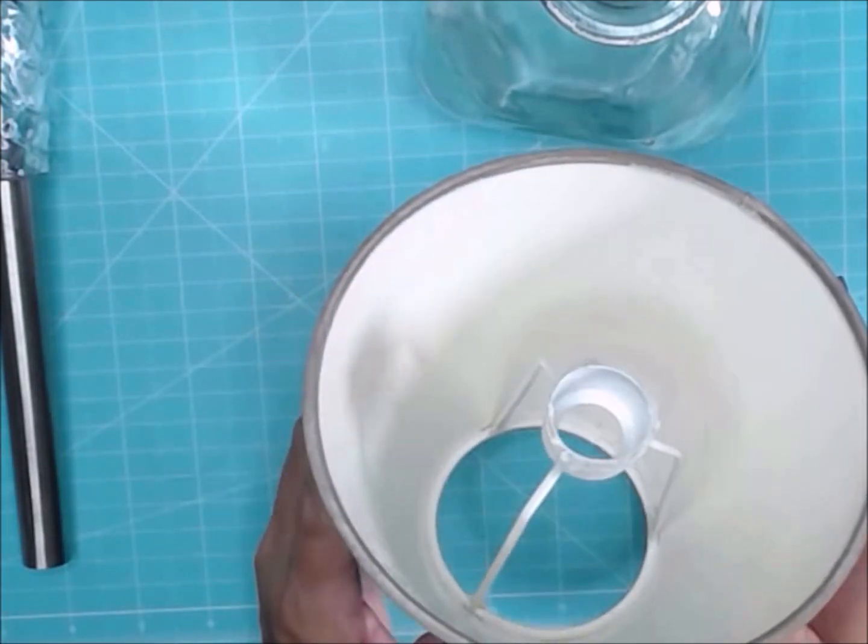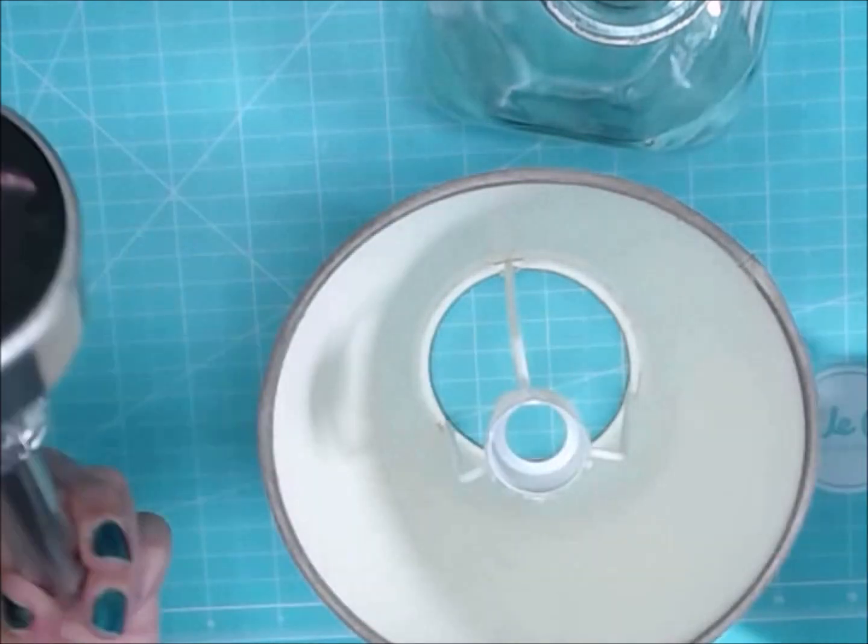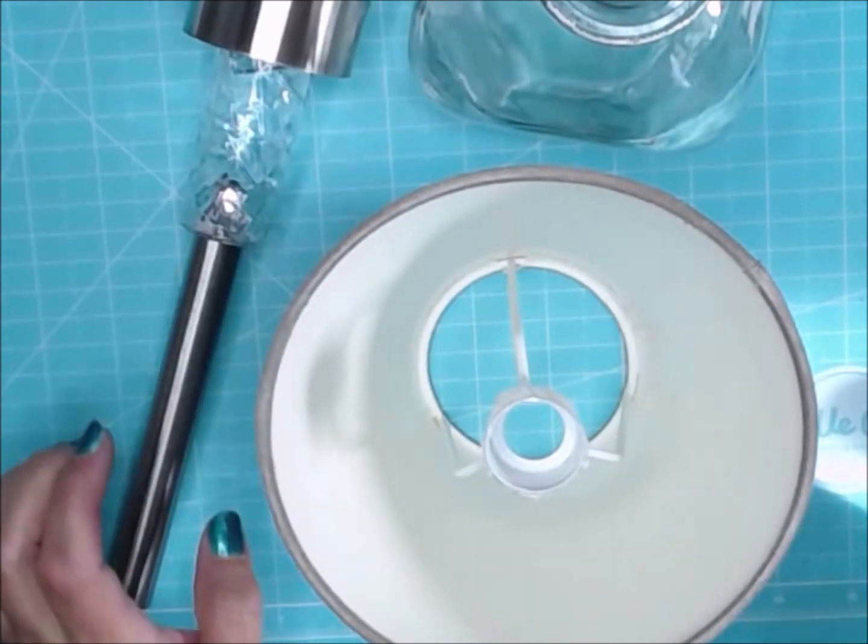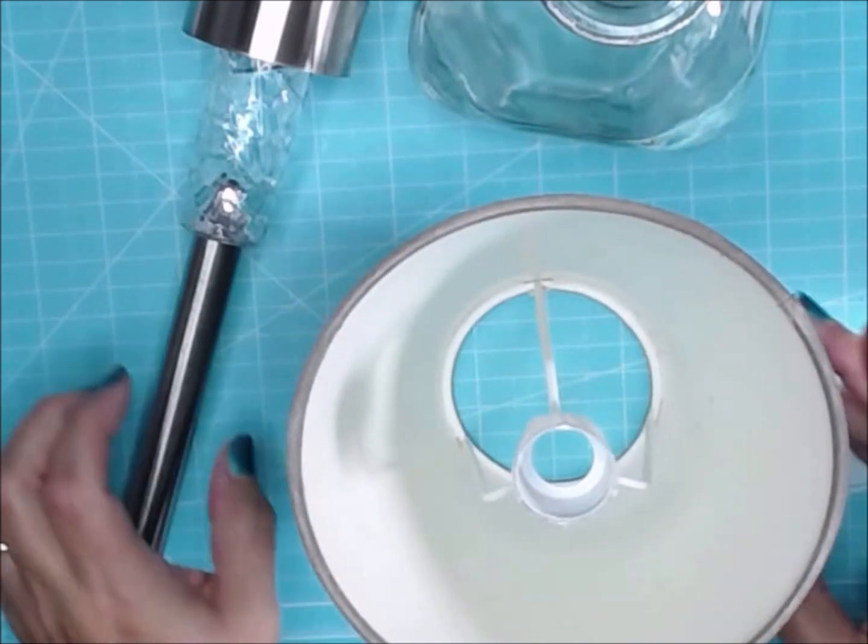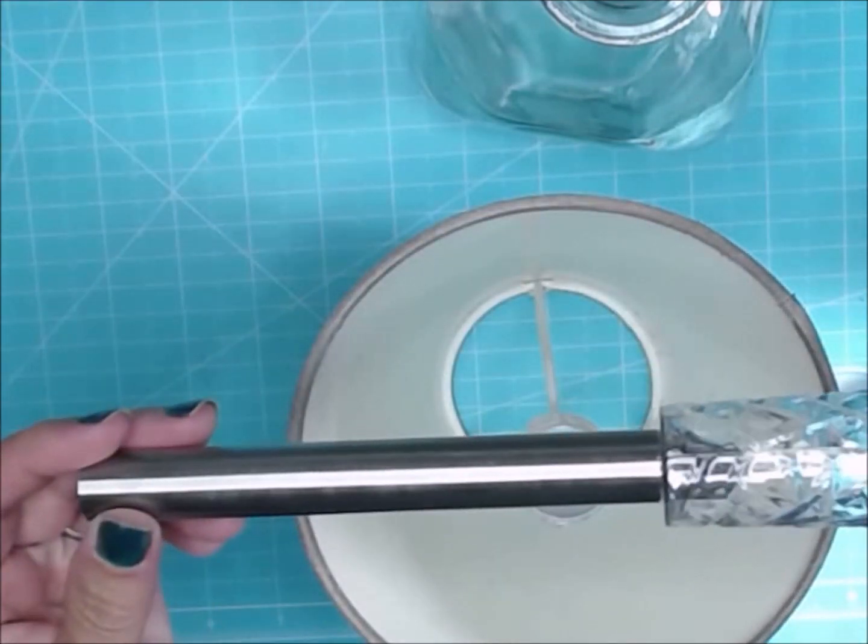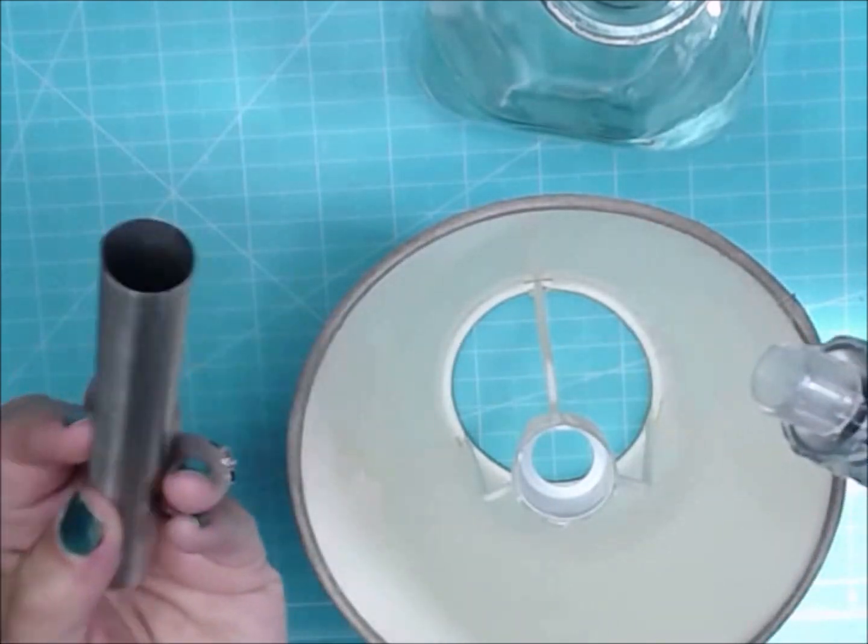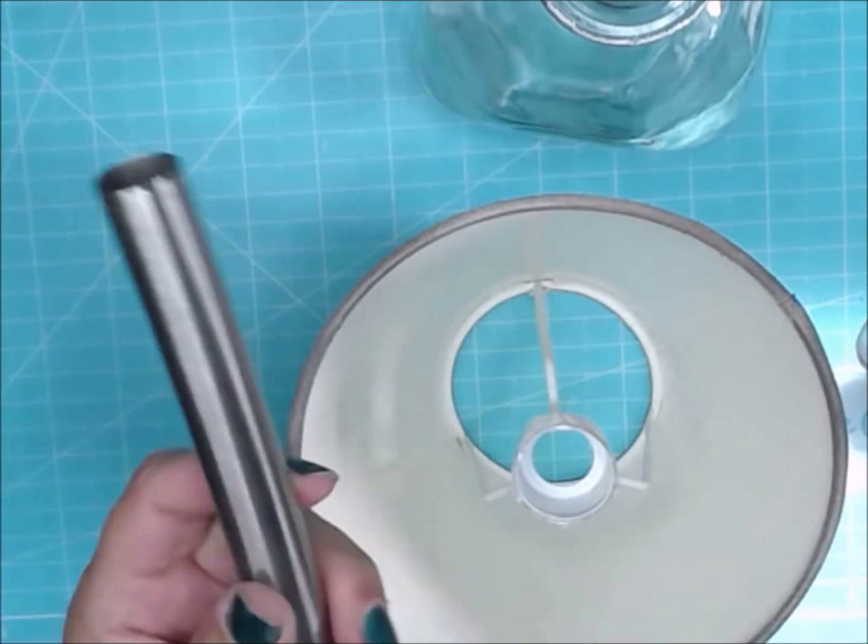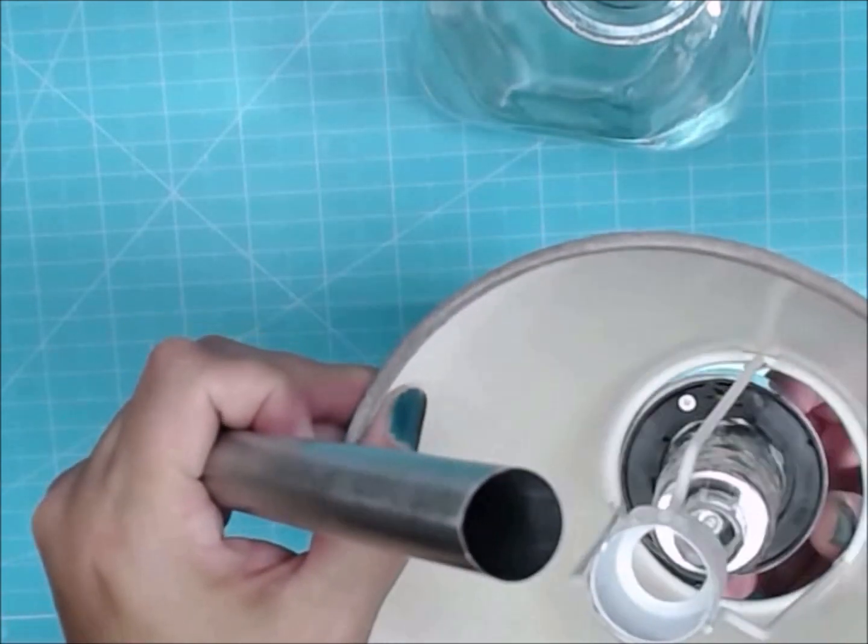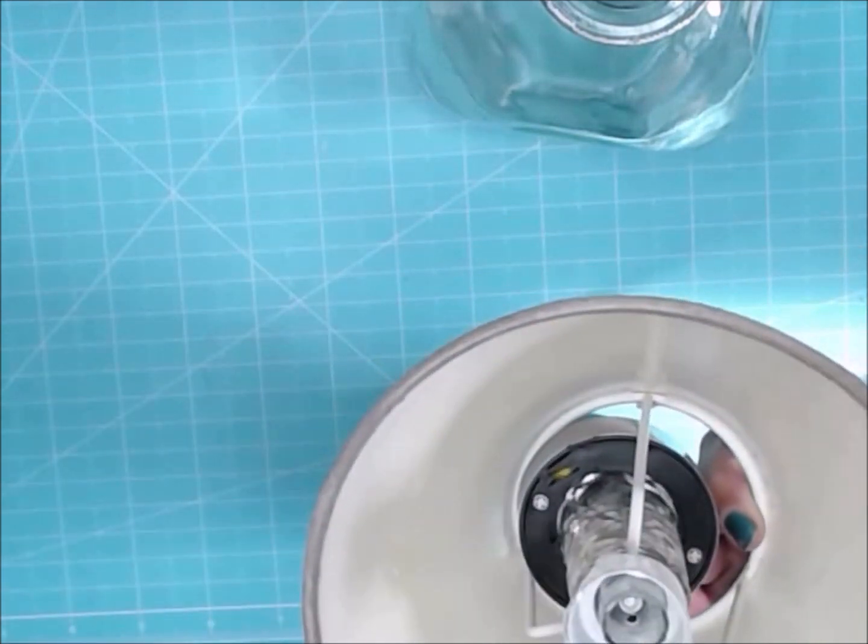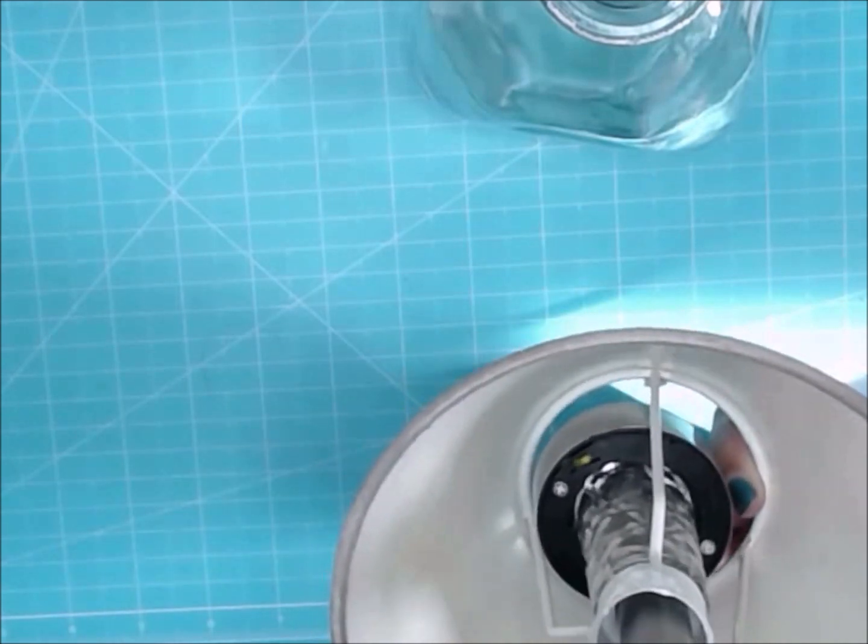Once your caulk has had a chance to set up, what you need to do is just take your solar light, and this again is a Dollar Tree item. I just pulled it off of the pole post here, and I'm just going to slip the light down through the base of the lampshade and put the post back on the bottom.